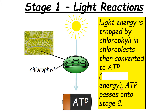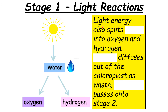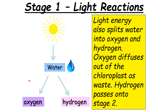The ATP is passed on to Stage 2. The second thing light does is split water into oxygen and hydrogen. Oxygen diffuses out of the chloroplast as a waste product, and hydrogen passes on to Stage 2. Oxygen is essential for complex life on this planet, but for a plant it's simply a waste product they get rid of.